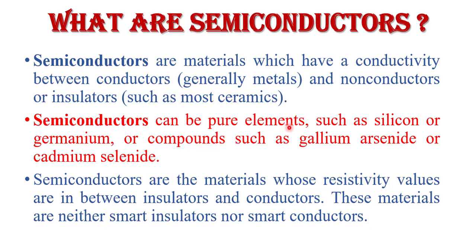Semiconductors can be pure elements such as silicon, germanium, or compounds such as gallium arsenide or cadmium selenide. Semiconductor materials have a resistivity value that lies between insulator and conductor — they are neither a pure insulator nor a pure conductor.